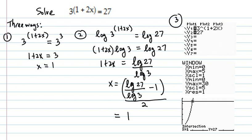To solve this exponential equation, we are going to do it three ways. We notice that the bases, which are 3 and 27, can be written with the base 3 to the third power.